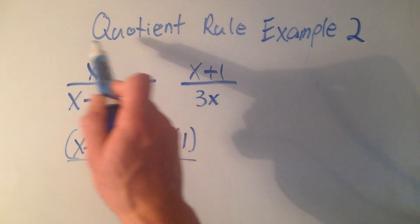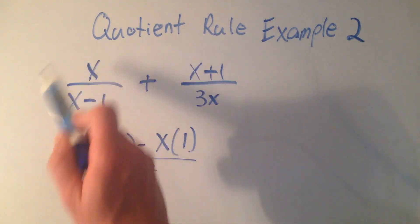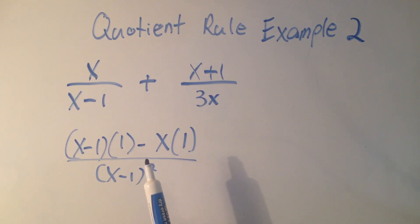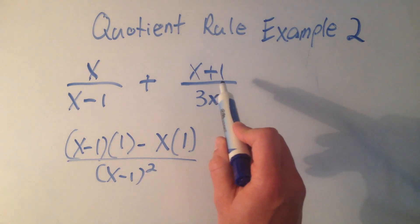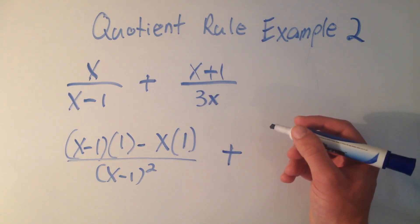If I just wanted to take the derivative of x over x minus 1, I would get this with the quotient rule without simplifying. But I have this other term here, and let's use the quotient rule again.